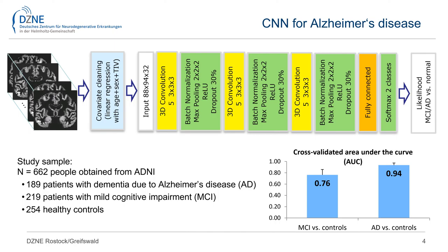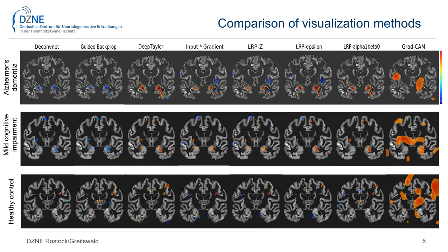We achieved 76% to detect amnestic mild cognitive impairment. We compared various algorithms for deriving relevance maps.